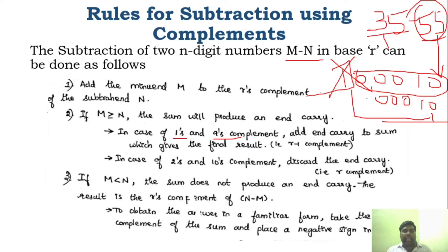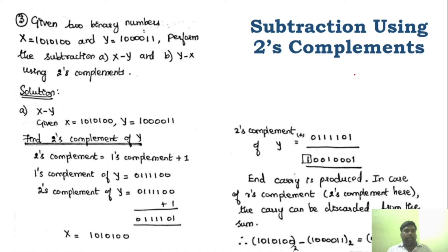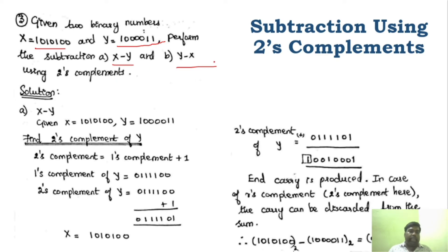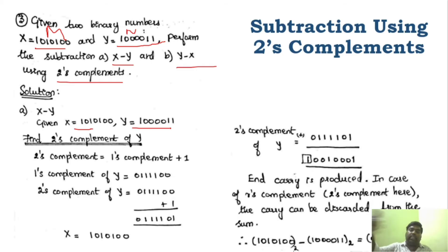Now we'll see how to subtract using 2's complement. This can be a 10-mark question. We are given X and Y, and we need to find out X minus Y as well as Y minus X. The simple first step: this is the minuend and this is the subtrahend. Here X is the minuend and Y is the subtrahend.